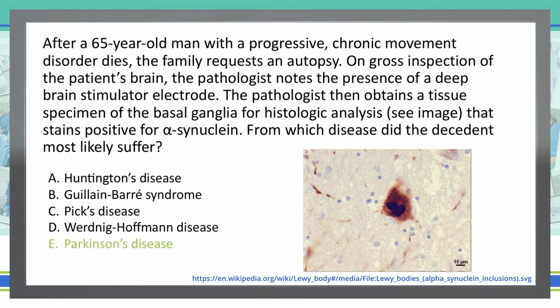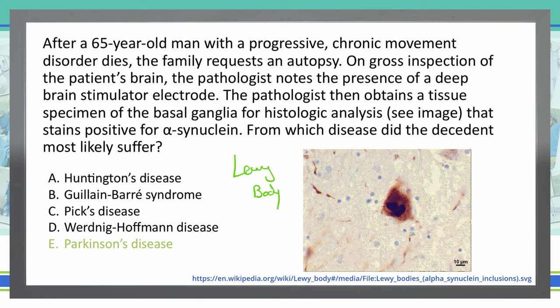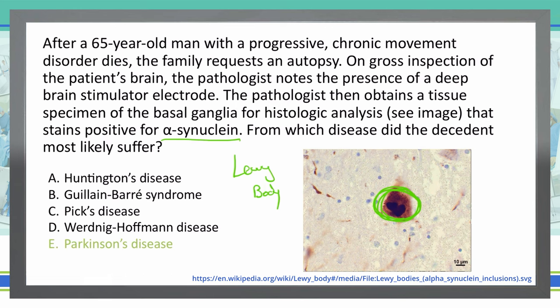E is the correct answer. The picture is showing a Lewy body, which are cytoplasmic inclusions containing alpha-synuclein, tubulin, ubiquitin, and neurofilament proteins — all part of these inclusion bodies. This is likely caused by disrupted proteasomal activity, causing cellular proteins to aggregate and accumulate, disrupting normal cell processes. Lewy bodies are often found in the substantia nigra in Parkinson's disease, which is why we see a movement disorder, as the substantia nigra is primarily associated with movement.